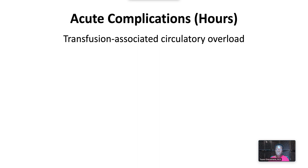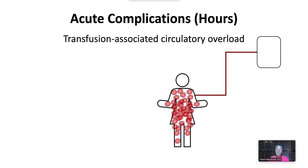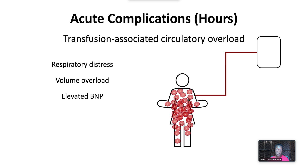Transfusion-associated circulatory overload presents as hypervolemia toward the end of or within six hours of transfusion. Risk factors include older age, pre-existing cardiovascular or kidney disease, and rapid infusion rates. Signs and symptoms include respiratory distress, signs of volume overload, elevated B-type natriuretic peptide, and radiologic findings of pulmonary edema.